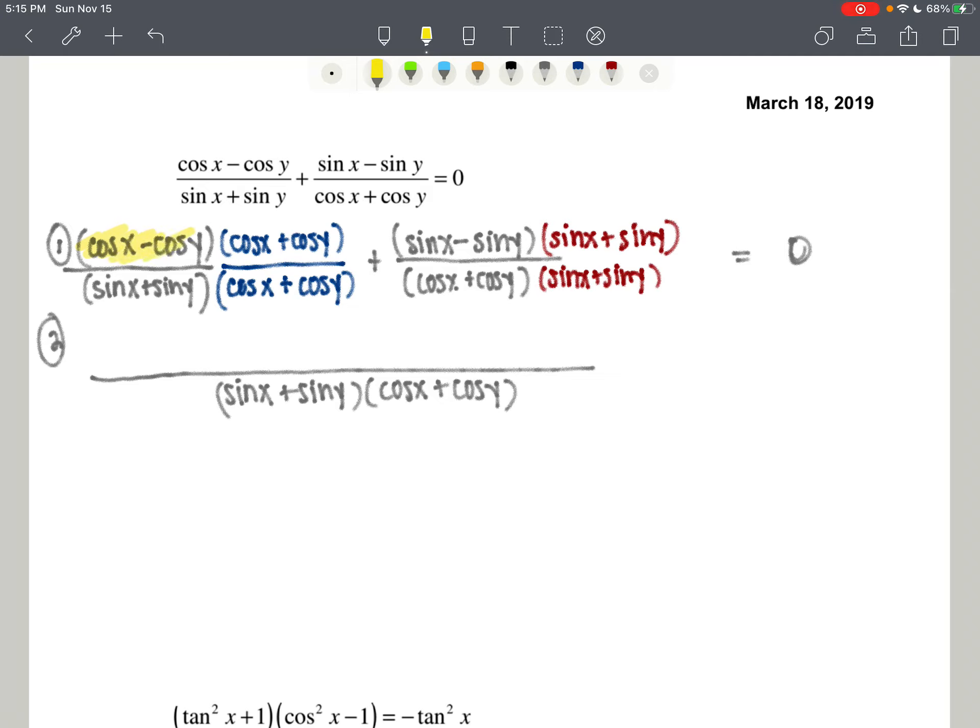And in the numerator, we're multiplying conjugates, which is going to result in cosine squared of x minus cosine squared of y. Those are different angles, so they don't zero out. Plus, again we have conjugates, sine squared of x minus sine squared of y. Again, they're different angles, so they don't zero out.